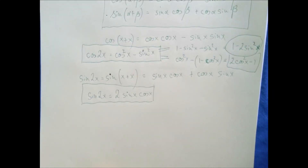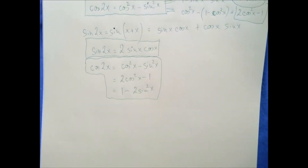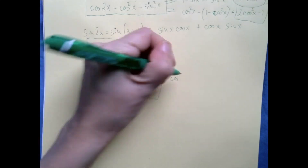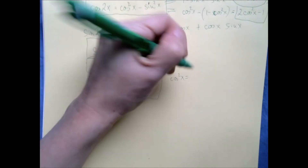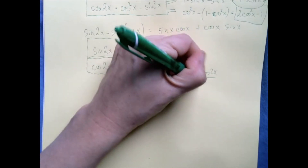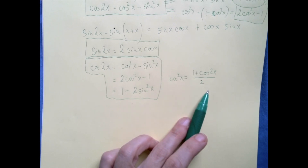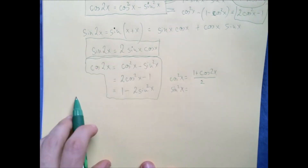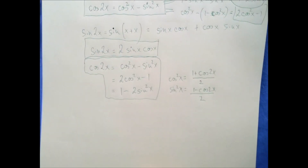So the double angle formula for cosine has three forms — let me just rewrite them because they are very important. In your next class called calculus, we're going to want to do certain things to functions, and products of two functions can be difficult. For example, sine squared x is a product: sine x times sine x. We can solve for cosine squared x to get cosine squared x equals (1 plus cosine 2x) over 2. Similarly, solving for sine squared x gives 1 minus cosine 2x over 2. We're going to need these formulas to walk away from products.